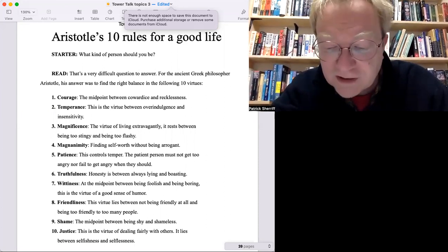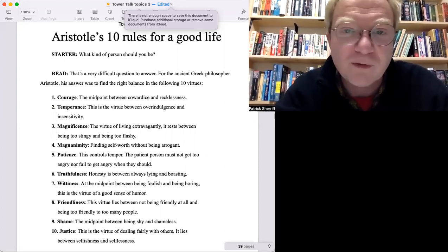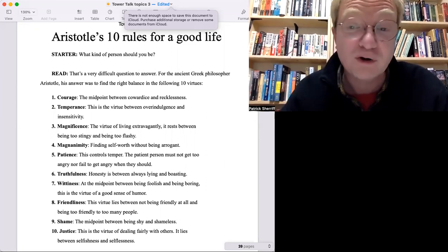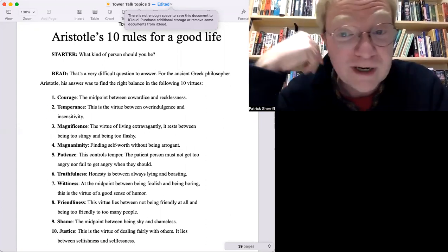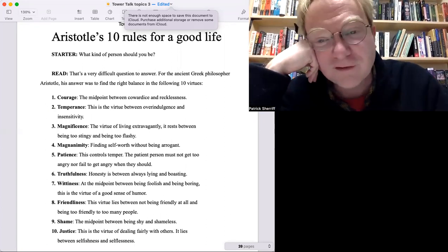In philosophy we think about what makes a good life, what's morality, what's moral, what's the good thing to do. One of the first people in Western thinking to think about these things and to write them down is Aristotle.